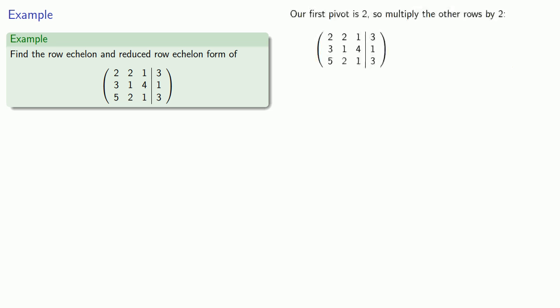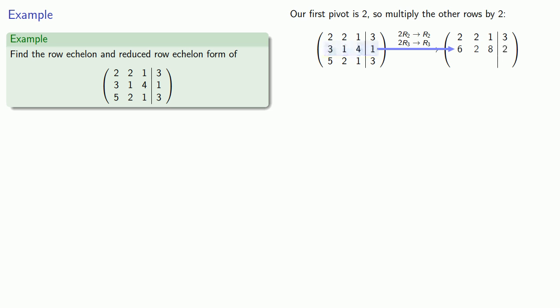Our first row has pivot 2, so we'll multiply the other rows by 2, making them 6, 2, 8, 2 and 10, 4, 2, 6.